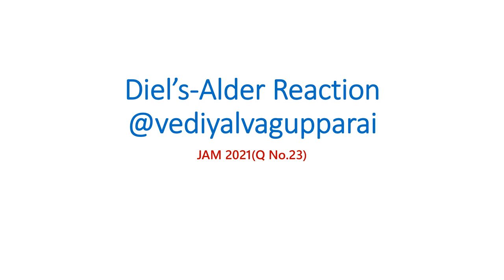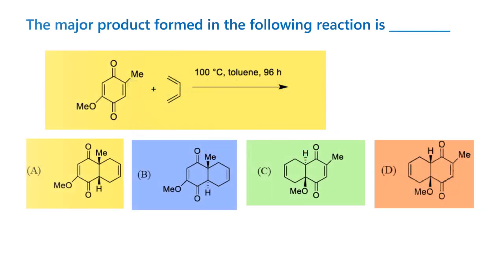Hello, welcome to Vedial Bhagaparay. In this video, we are going to see the Diels-Alder reaction. This reaction is a very useful reaction in organic chemistry. This particular question is taken from the JAM 2021 question paper. Let us see the question first. The major product formed in the following reaction is — there is an equation given and then four options of products are given.